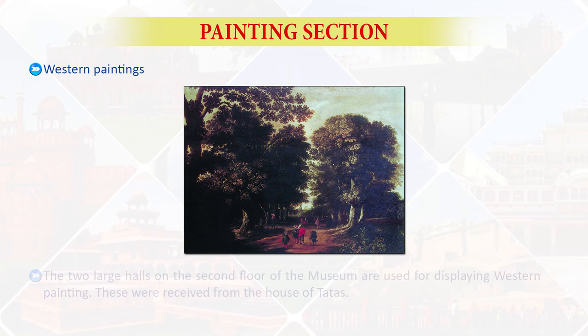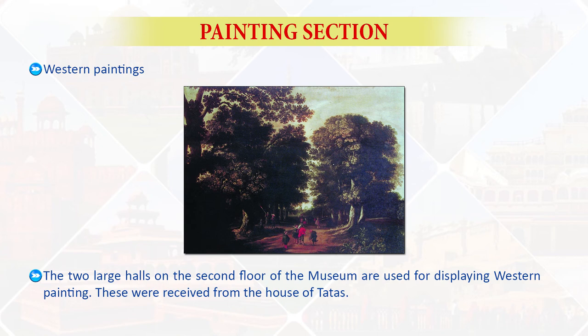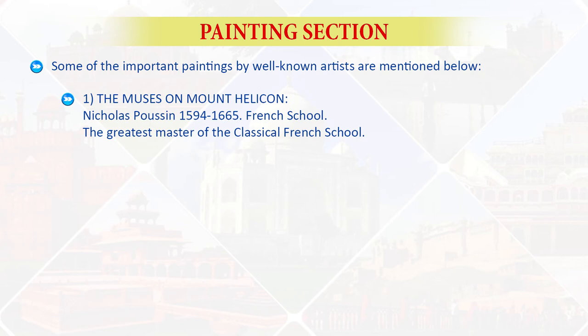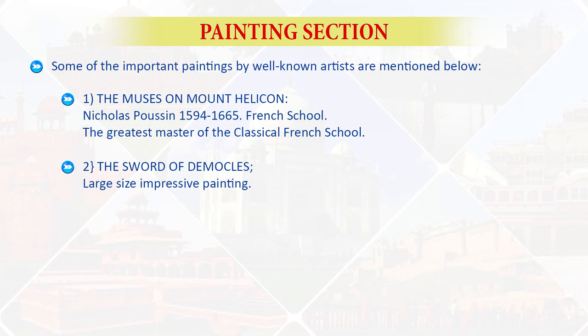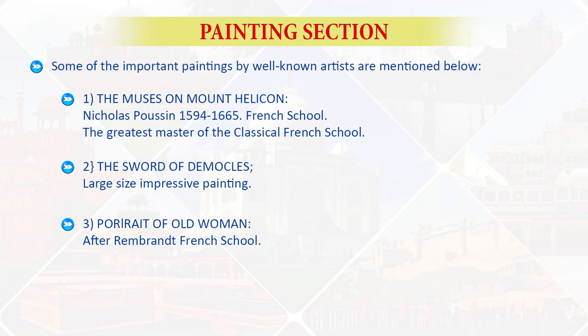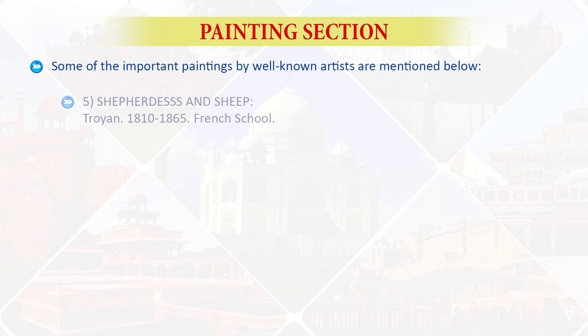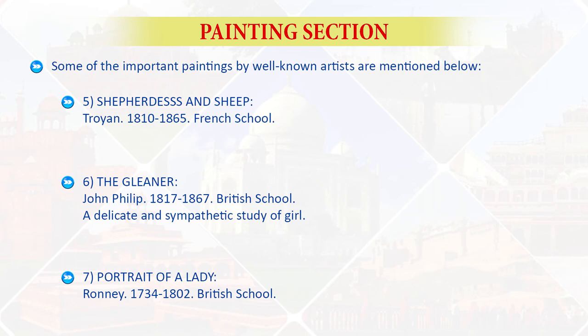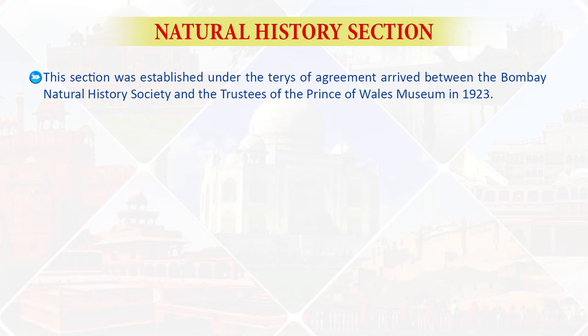Next are western paintings. The two large halls on the second floor are used for displaying western paintings received from the house of the Tatas. Some important paintings by well-known artists include: The Muses on Mount Helicon by Nicholas Poussin of the French school; The Sword of Damocles — a large impressive painting; Portrait of Four Women after Rembrandt; Venus and Adonis by Carlo Maratti of the Roman school; Shepherdess and Sheep by Tryon of the French school; The Gleaner by Jean-Philippe of the British school; and Portrait of a Lady by G. Romney of the British school.